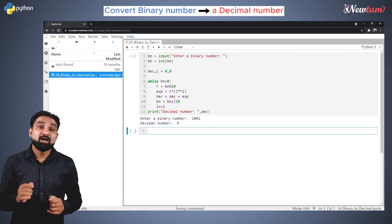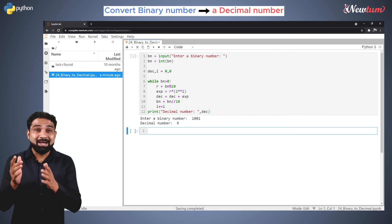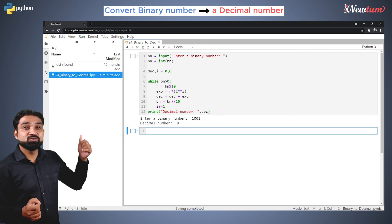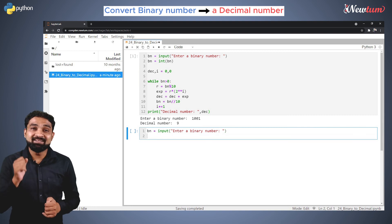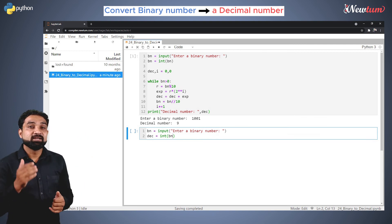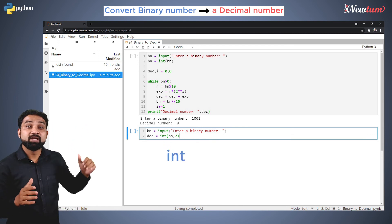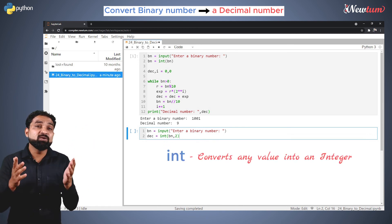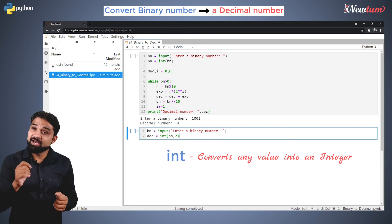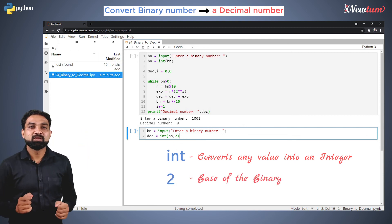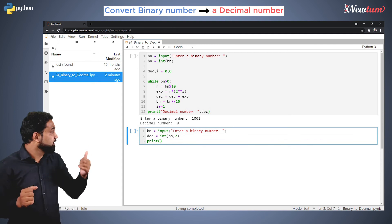In this method, again we will convert binary to decimal, but using the inbuilt method of Python. Again accept the input from the user in the variable bn. Then write dec equal to int, and in bracket pass the variable bn, then a comma and then 2. Here int is a function that converts any value into an integer, and 2 is the base of the binary. Now print the variable dec.